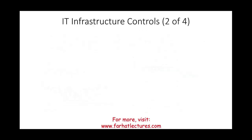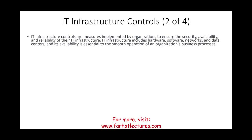The next component is IT infrastructure controls. These are measures to ensure the security and availability of your IT infrastructure, which can include hardware, software, networks, and data centers. You want to make sure these systems are available for the smooth operation of the business — if they're not, you're in trouble.